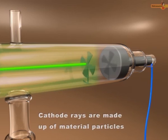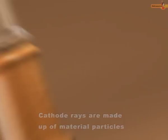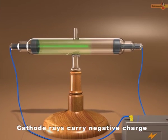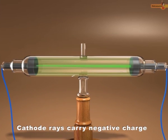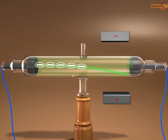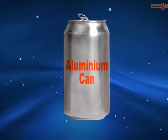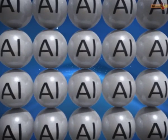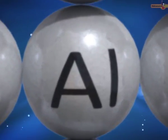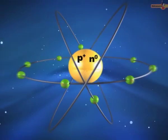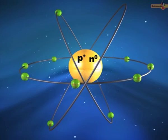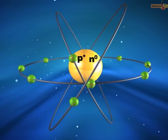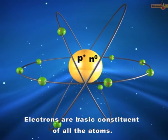After studying the various properties of cathode rays, it is clear that cathode rays are made up of material particles and carry negative charge. The negatively charged material particles constituting the cathode rays are called electrons. Electron was the first elementary particle to be discovered. The characteristics of electrons do not depend upon the material of electrodes and the nature of the gas present in the cathode ray tube. So we can conclude that electrons are the basic constituents of all atoms.